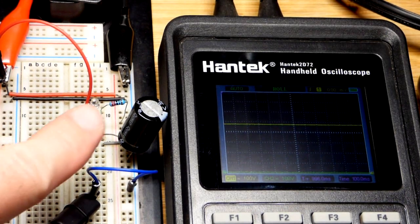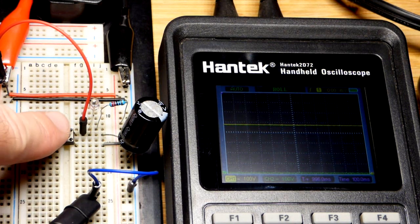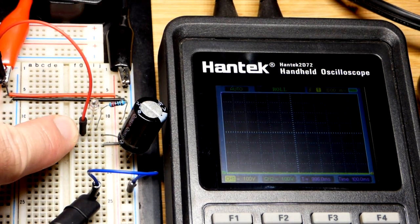So now in this video we have a light dependent resistor here that's going to charge the capacitor based on how much light is falling on it.